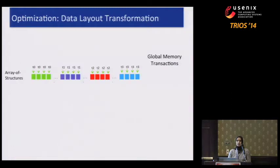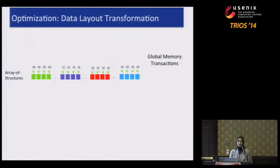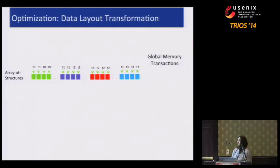Let me talk about the specific optimization we're looking at. This is a well-known optimization on the GPU — a data layout transformation. If you imagine a structure with several member fields, and each thread works on one instance of this structure, when you have multiple threads they each work on different instances.